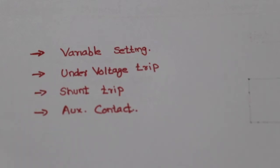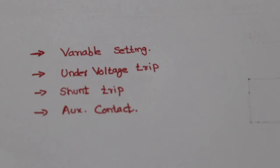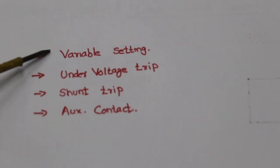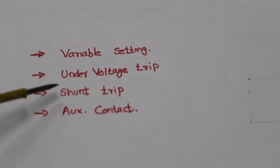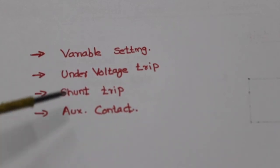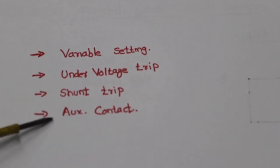This is a protection feature. These are extra features you can use: variable setting, under voltage trip, shunt trip, and auxiliary contact.